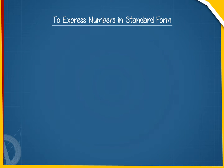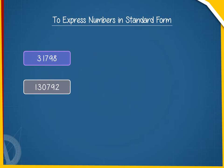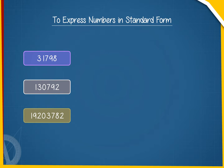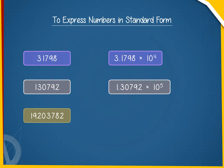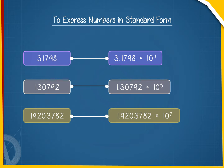The standard form of numbers such as 31,798; 1,30,792; and 19,02,03,782 are written as 3.1798 × 10⁴, 1.30792 × 10⁵, and 1.9203782 × 10⁷, respectively.